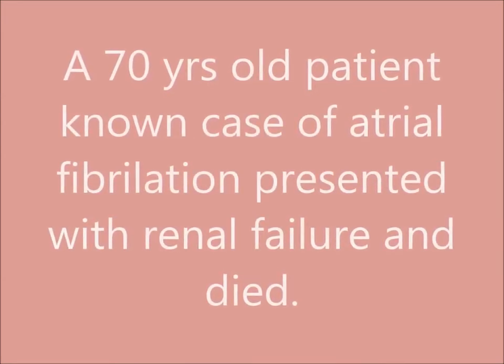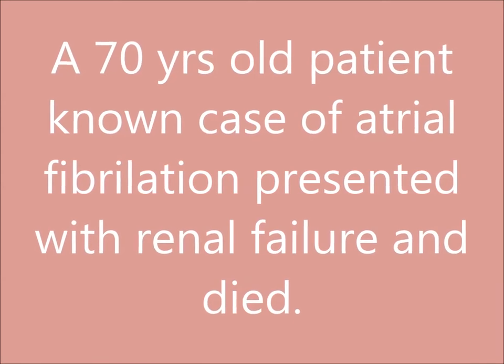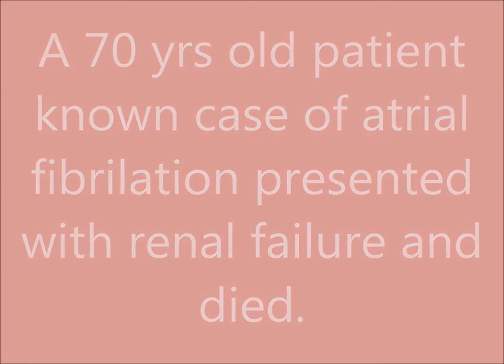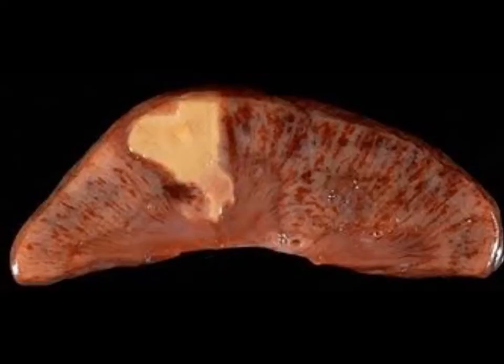Clinically, a 70-year-old patient, a known case of atrial fibrillation, presented with renal failure and died. Atrial fibrillation is a source of thromboemboli. On autopsy there is a renal infarct — a wedge-shaped or triangular solid area that is whitish-yellow and pale in color, with its base towards the capsule and apex towards the corticomedullary junction.